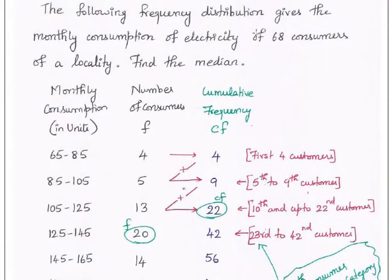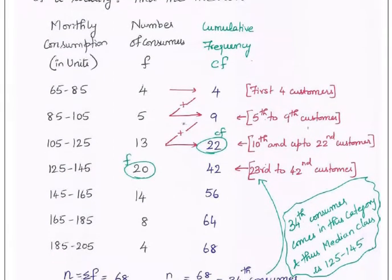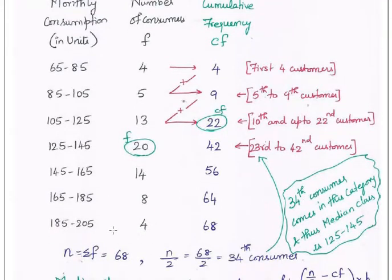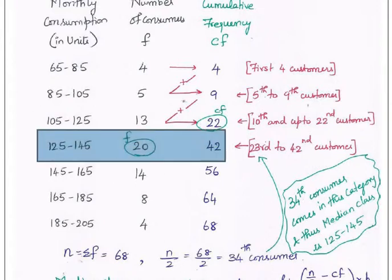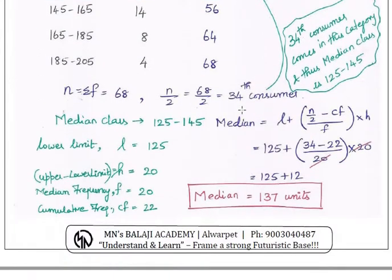Recap of finding the median: totally 68 consumers are given in the frequency distribution. You have the frequency F column, and you must find the CF column. Then find N by 2, which is 34. Check which category the 34th customer falls in. Up to 22 customers, the category is 105 to 125. The 23rd to 42nd consumer have the category 125 to 145. So the 34th customer comes in that category. Lower limit L is 125, frequency F is 20, cumulative frequency CF is 22, and height is 20. Apply these in the median formula and verify that 137 lies between 125 and 145.